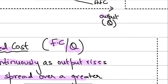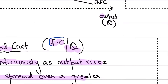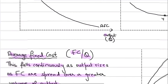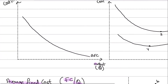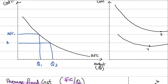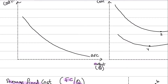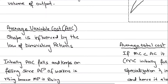Remember that your average fixed cost continuously falls as output rises because fixed costs are spread over a greater volume of output. Since your fixed costs are constant and you're increasing the quantity — the denominator — the value of the average fixed cost goes down. So if you increase your quantity from Q1 to Q2, your average fixed cost is going down. That is how you draw the average fixed cost curve — it represents that your average fixed cost is constantly falling.